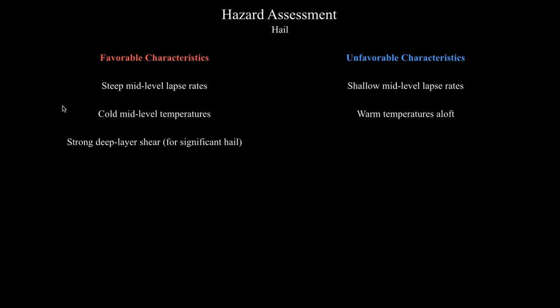For significant hail — that is hail over two inches in diameter — you want to see strong deep layer shear. This is the same rule of thumb as with tornadoes: you want at least 35 to 40 knots of surface-to-six or surface-to-eight kilometer shear, or effective shear. That's so you can get supercells. If you get supercells forming, you have a much better chance of getting organized updrafts that can produce very large hail. You can get large hail with moderate shear or even in single-cell thunderstorms, but if you want the really big hail, you definitely want supercell thunderstorms, which means strong deep layer shear.